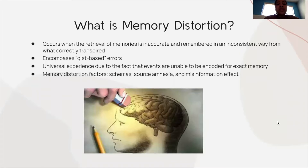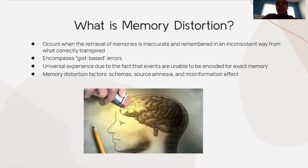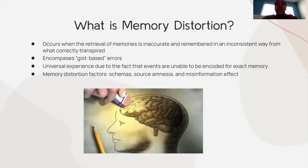Memory distortion occurs when the retrieval of memories is inaccurate and remembered in an inconsistent way from what correctly transpired. More specifically, it encompasses gist-based errors, in which individuals falsely remember similar information, and source misattributions, where individuals correctly remember some pieces of information but incorrectly associate that information with a specific instance. Memory distortion is a universal experience because events are unable to be encoded for exact memory, so we all experience some type of memory distortion.